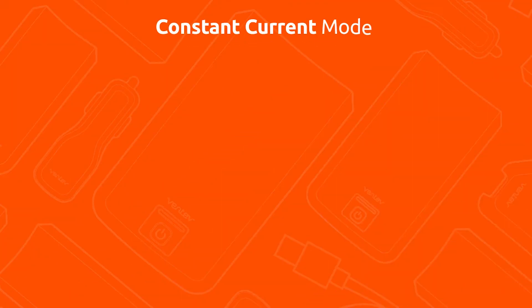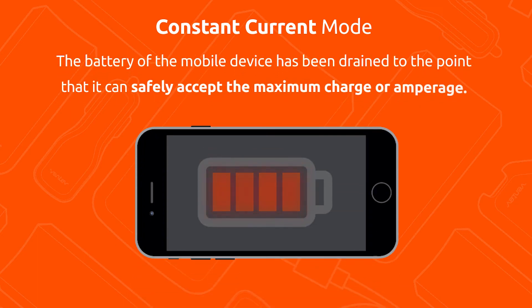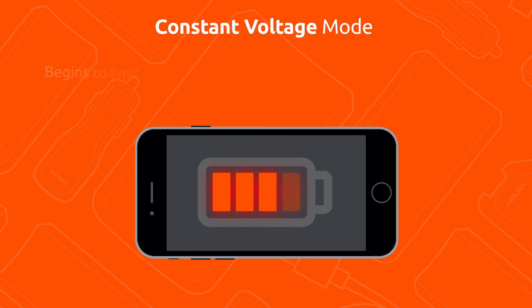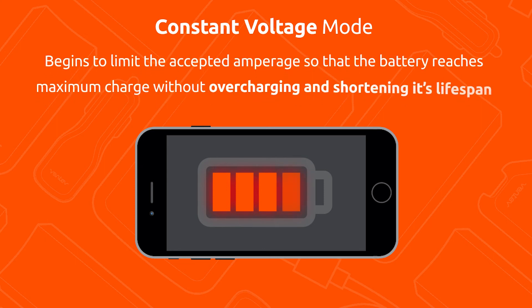In the constant current mode, the battery of the mobile device has been drained to the point it can safely accept the maximum charge or amperage. Depending on the device, once the mobile battery reaches its nominal voltage, which is usually 90-95% of the way to a full charge, it will migrate to constant voltage mode. In this mode, the device begins to limit the accepted amperage so that the battery will reach maximum charge without overcharging the battery and shortening its lifespan.